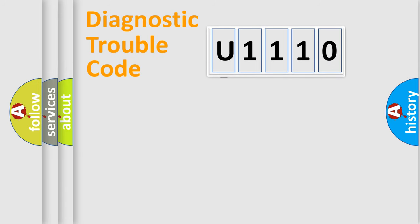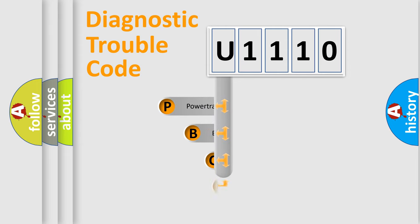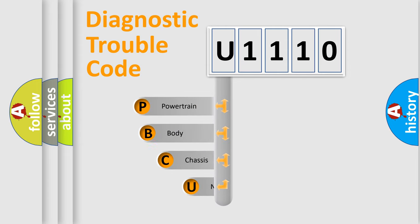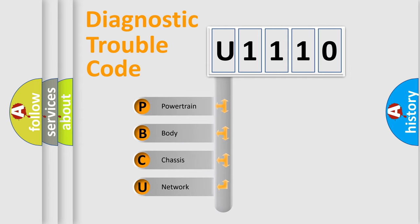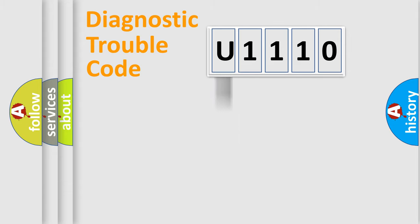First, let's look at the history of diagnostic fault code composition according to the OBD2 protocol, which is unified for all automakers since 2000. We divide the electric system of an automobile into four basic units: Powertrain, Body, Chassis, and Network. This distribution is defined in the first character of the code.